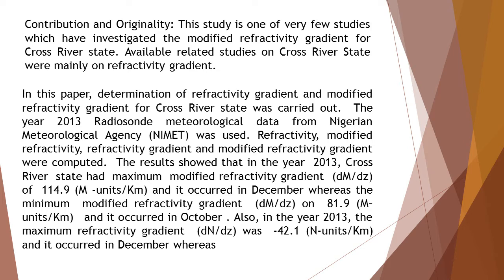The results show that in the year 2013, Cross-River State had a Maximum Modified Refractivity Gradient (dM/dZ) of 114.9 N-units/km, and it occurred in December, whereas the Minimum Modified Refractivity Gradient (dM/dZ) of 81.9 N-units/km occurred in October.